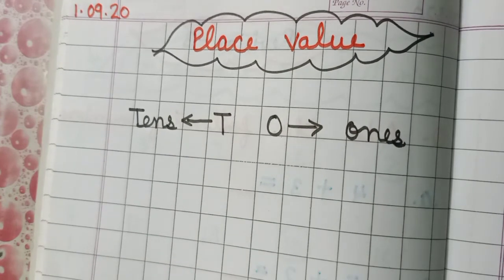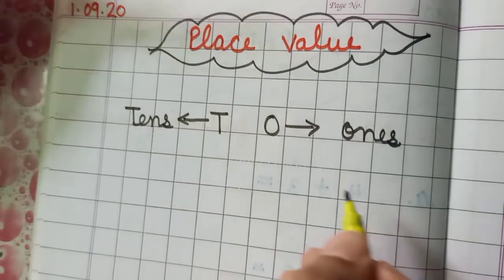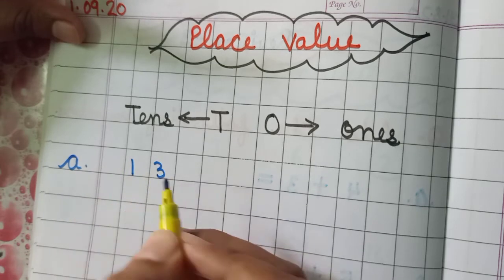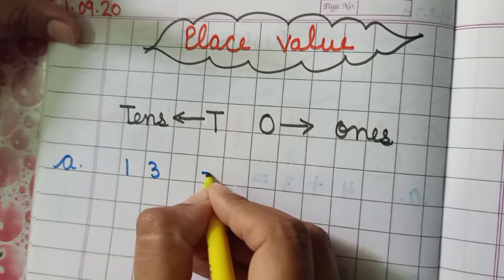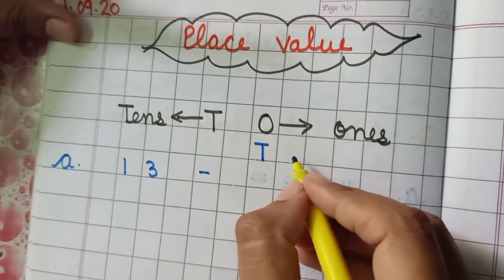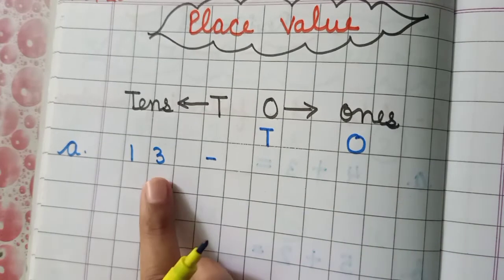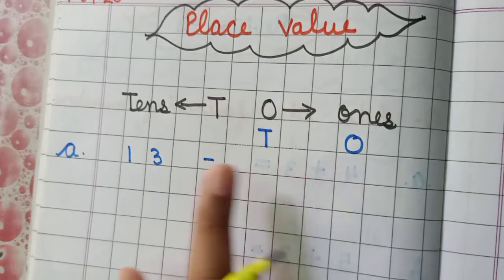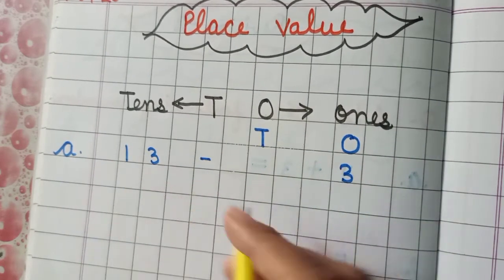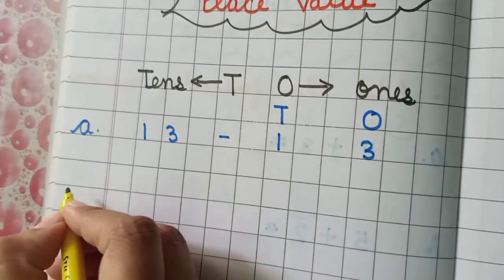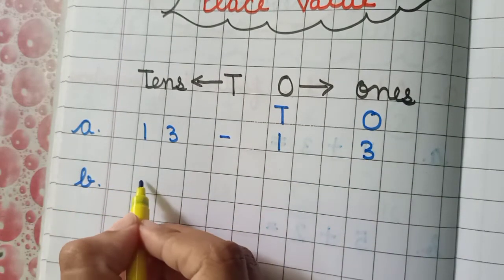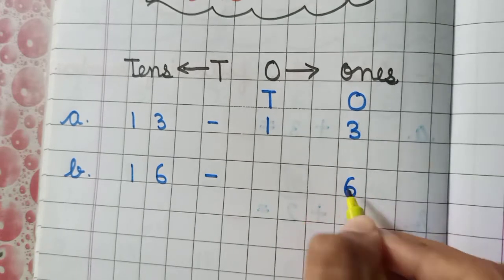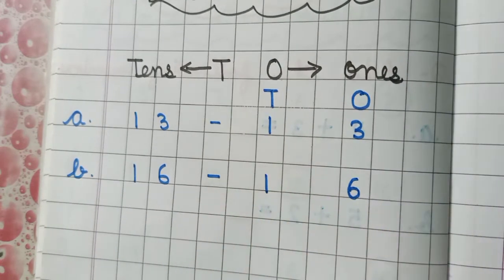Now leave one line and write Part A: Thirteen. Write tens and ones columns. Which digit will come under ones? Ones ke place pe kaunsi aayegi? Three. And tens: one. Part B: Sixteen — six will come under the ones and one will come under the tens.